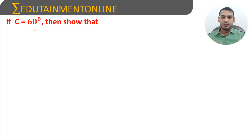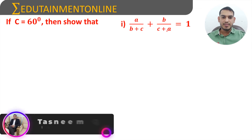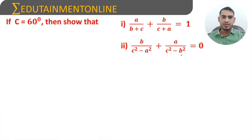If angle C equals 60 degrees, then show that a/(b+c) + b/(c+a) = 1, and b/(c²-a²) + a/(c²-b²) = 0. We will prove the first part first.